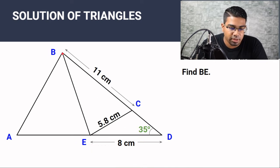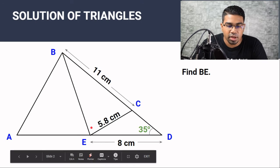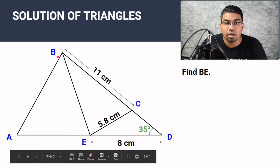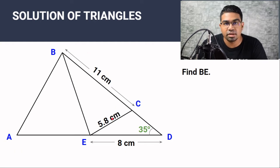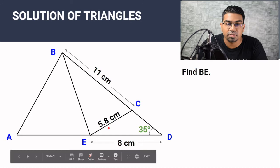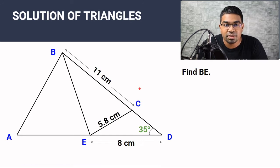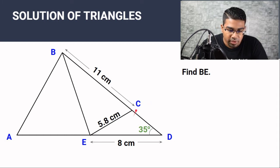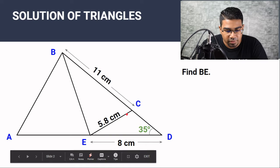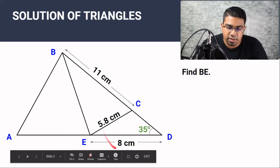When we want to find the length of BE, we have to choose triangle BEC. However, we only have two pieces of information — two lengths of sides — so we cannot use the sine or cosine rule yet. The first thing to do is look for a triangle with three variables already given. If we look at triangle CED, we have two lengths of sides as well as one angle, so we can apply the sine and cosine rule to this triangle.